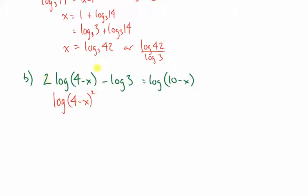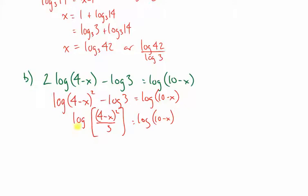Next, I'm going to recognize that a log minus a log, right here, with the same base, can be written as one log of a quotient. So, I write that. Now, I'm going to use a logical argument to say that if I have a log equal to a log and the bases are the same, then the arguments must be the same. So, 4 minus x squared over 3 must equal 10 minus x.